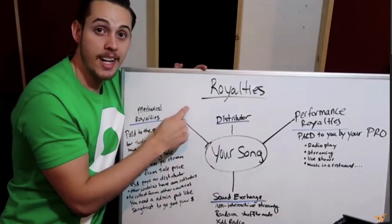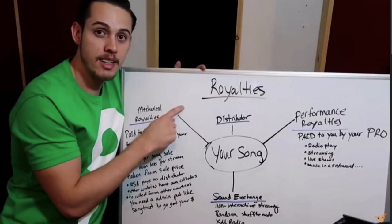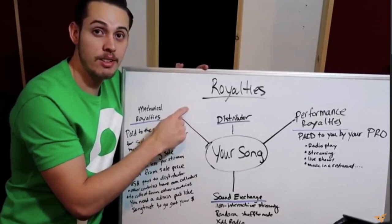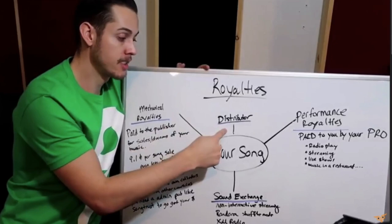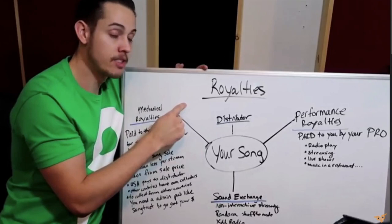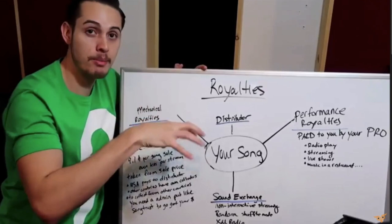Say your distributor uploads your song to iTunes. You're doing a 99-cent download and iTunes takes a 30% cut from every download. So one sale at 99 cents minus 30% leaves you with 69 cents. That 69 cents is paid to your distributor only if that iTunes download was made in the US. If it was made in the UK, Germany, Italy, or another country, you only get 60 cents — 9.1 cents goes to your mechanical royalty.